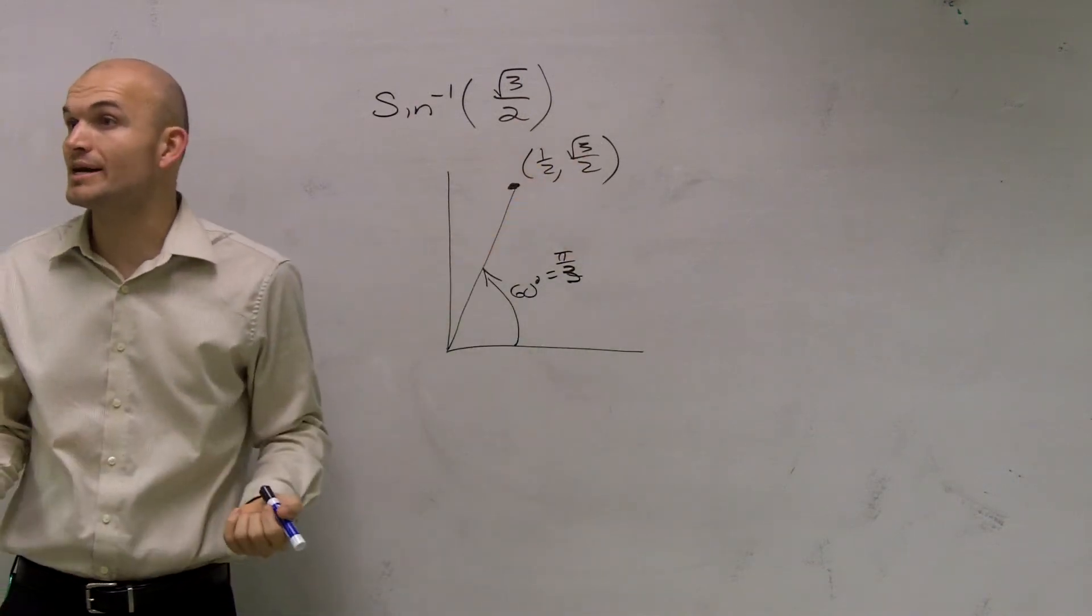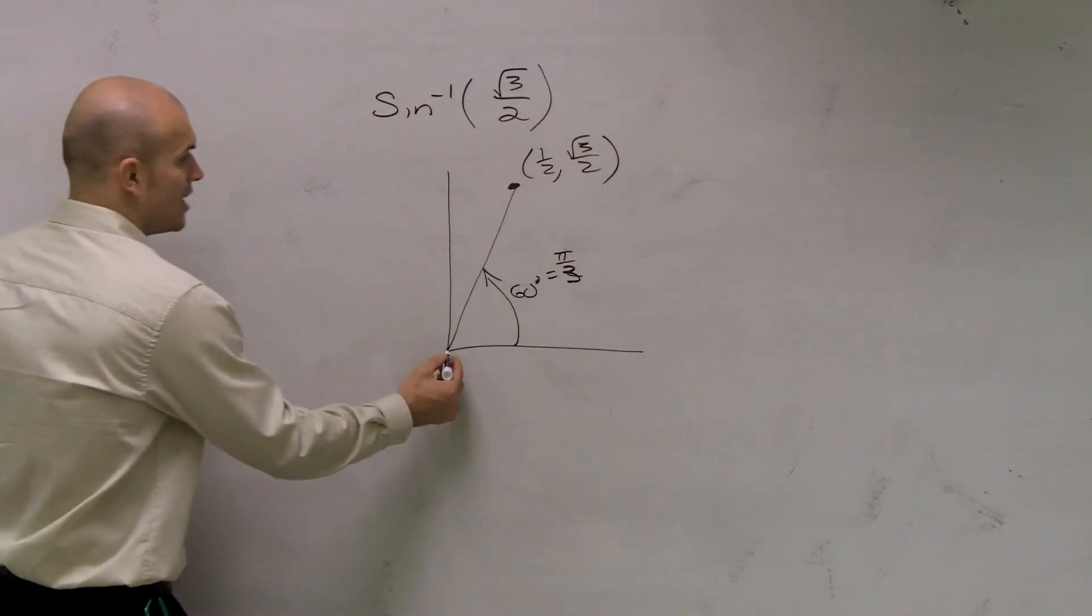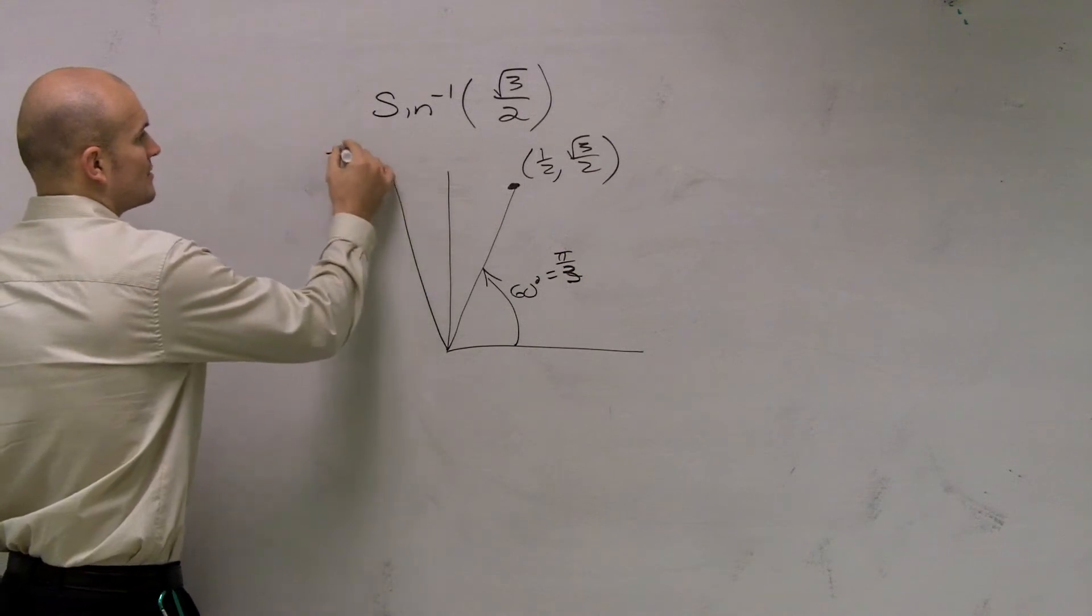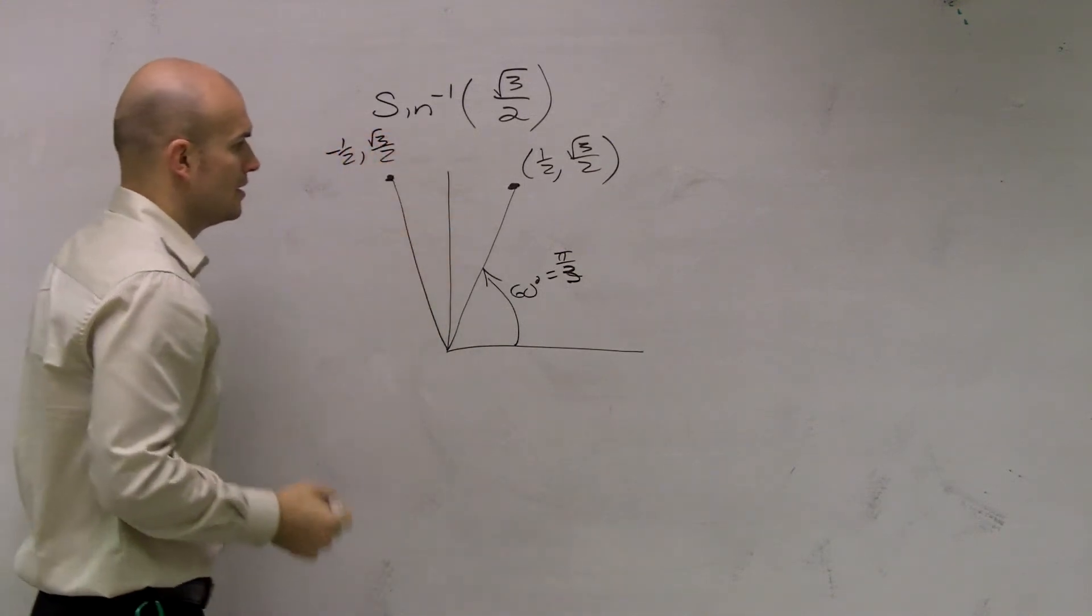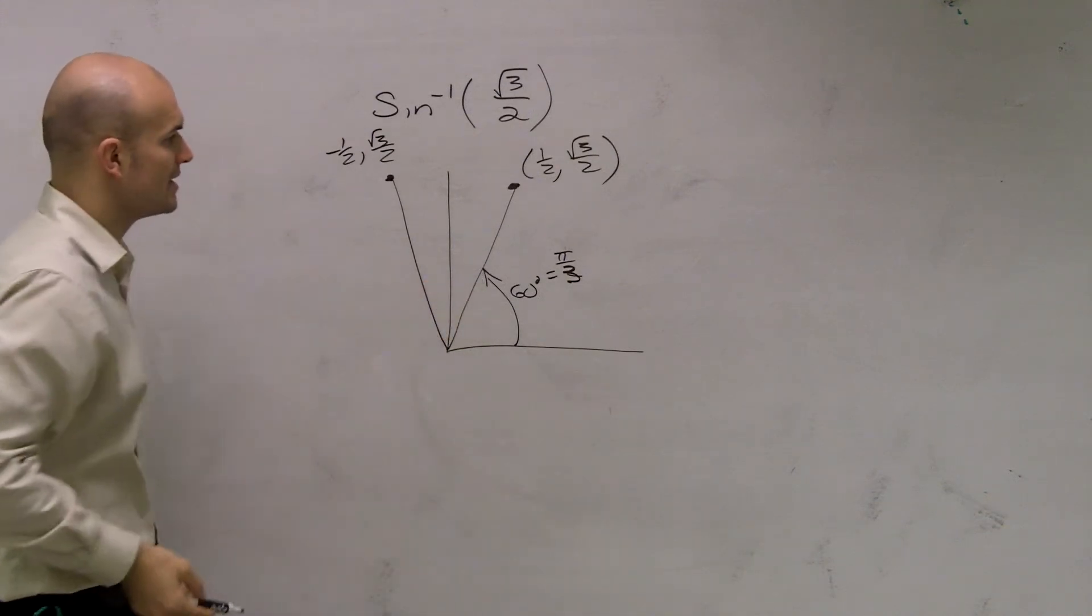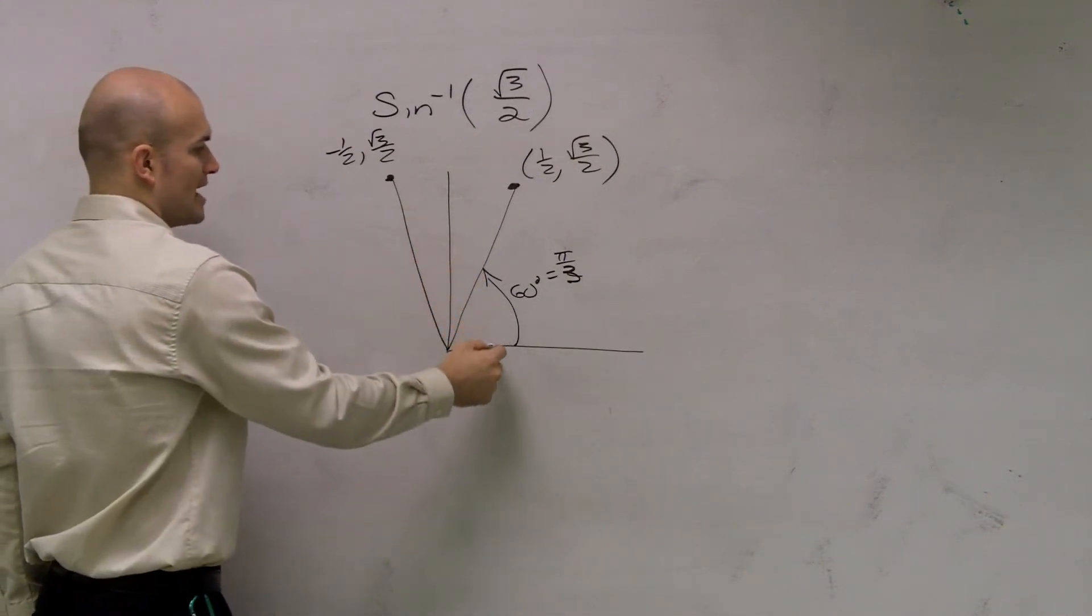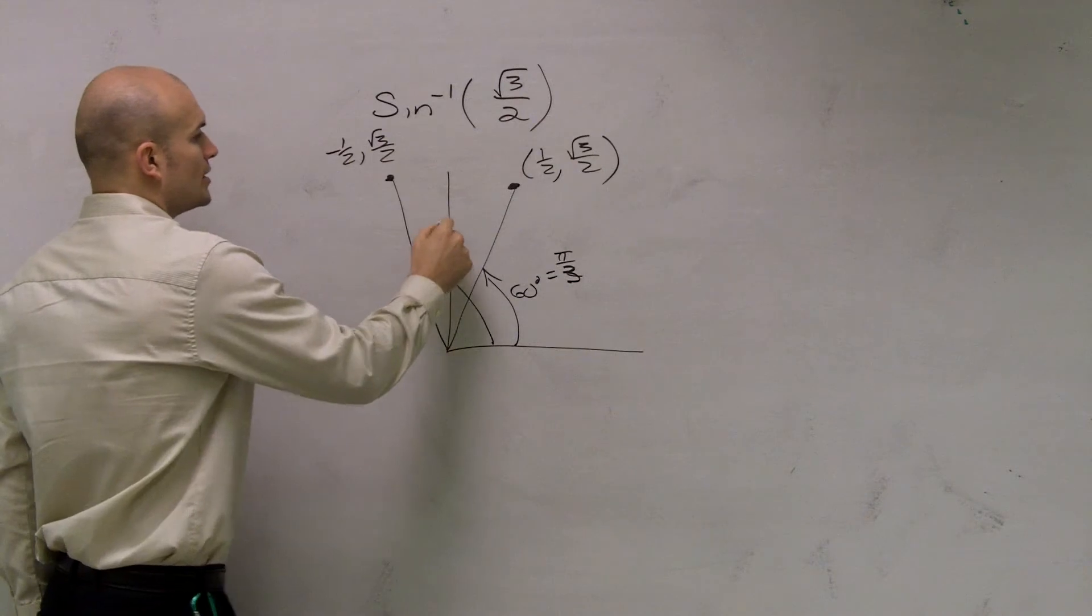However, when also does sine equal radical 3 over 2? Sine also equals radical 3 over 2 at negative 1 half, radical 3 over 2, which is just going to be add another 60, which would be at 120 degrees, right?